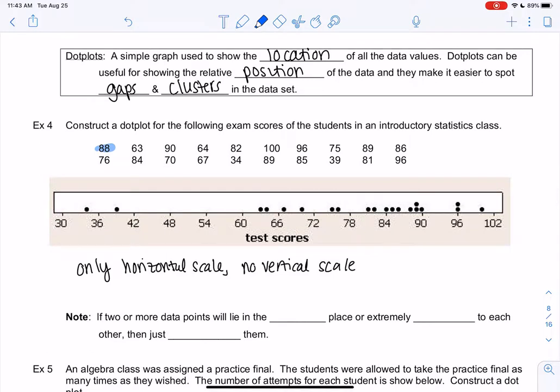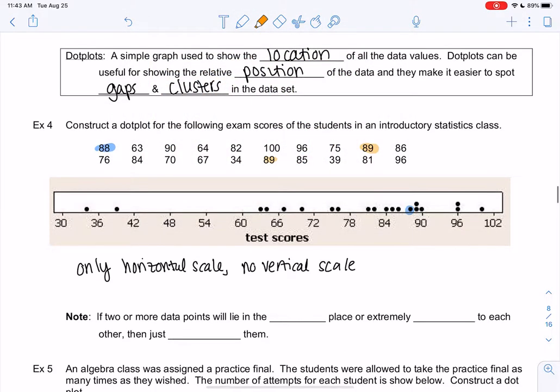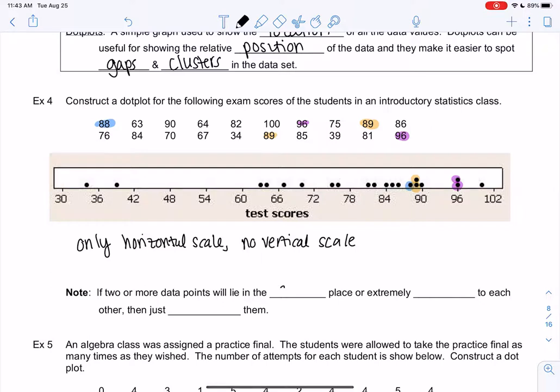So let's look at some of these. So 88, we just put a dot at 88. Let's look at 89. When a number shows up twice, we just stack it. So 89 would be those two. So hopefully this makes sense. 96 also shows up twice, and so that's why we have two stacked at 96. We just use dots to show the vertical scale rather than labeling a vertical scale. So when two points lie in the same place or extremely close, we just stack them. And so this is what we're doing instead of a vertical scale. Someone can just simply count the dots.